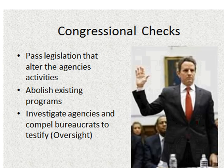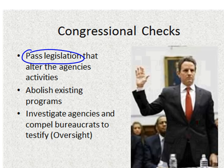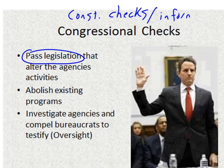Congress also has checks on the president and the bureaucracy. Passing legislation is a no-brainer — Congress passes the law and can give more or less power to an agency. If they don't like what the EPA is doing, they can pass a new law limiting its power and funds. One important thing to know is the distinction between constitutional checks that Congress has on the bureaucracy versus more informal checks, because there was one year on the exam where students lost credit for listing checks that weren't actually in the Constitution. So read the question carefully — constitution versus not.